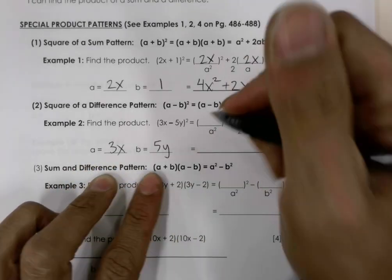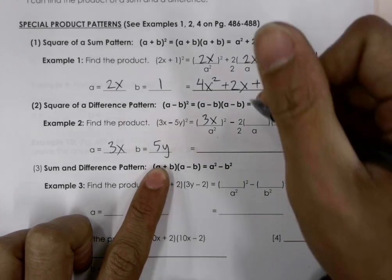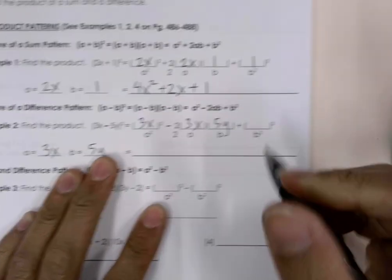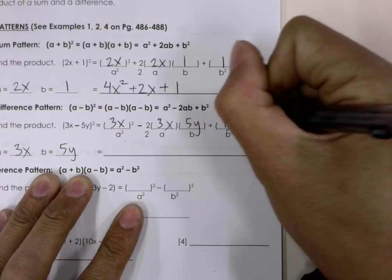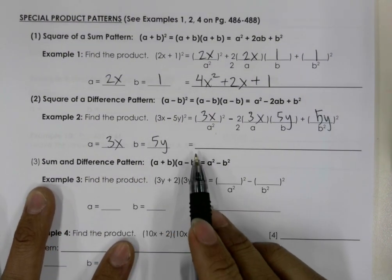And then we're going to substitute in our values. So it's going to be 3x for a here, 3x for a here and 5y for b. And then down here for b² it's going to be 5y.